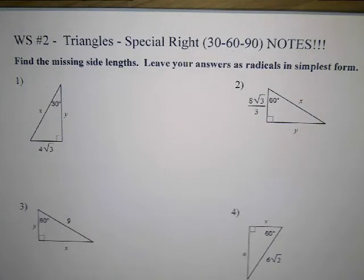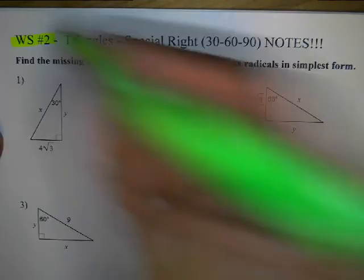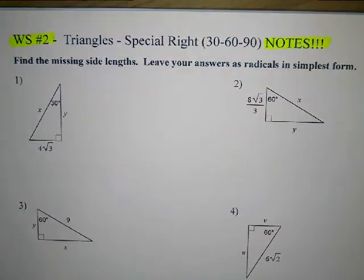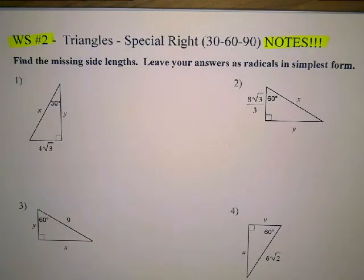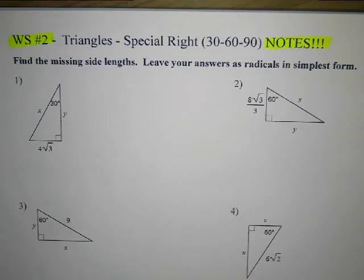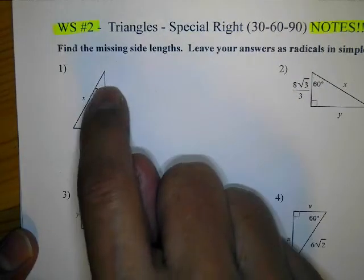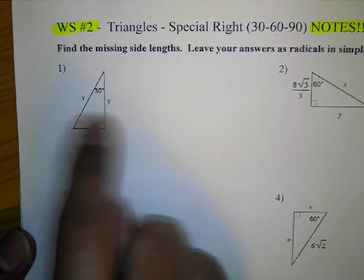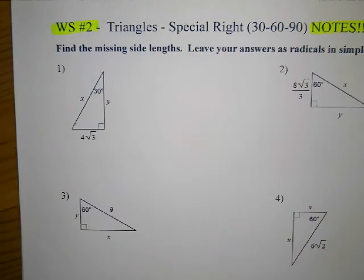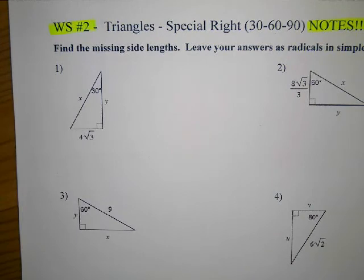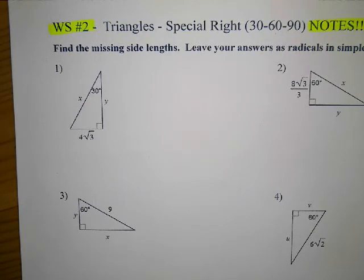Here are the notes for the 30-60-90 triangles, which we started. We did one assignment — worksheet one. This is worksheet two. Here's where you can pause and copy the title and directions: find the missing side lengths and leave your answer in simplest radical form. We always look to reduce. I'm going to move the papers around. Copy number one — it'll give you an angle and one of the sides, and two letters for the missing sides. I ignore those letters and focus on what's given.